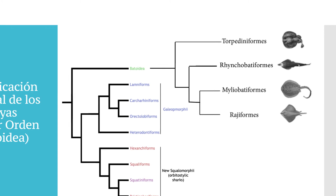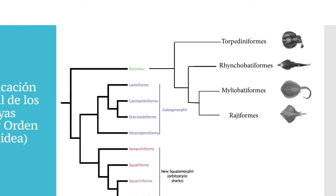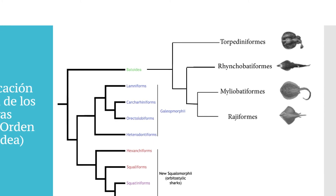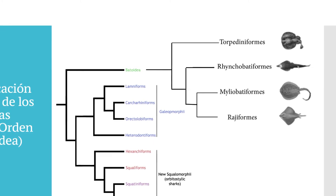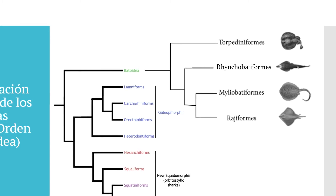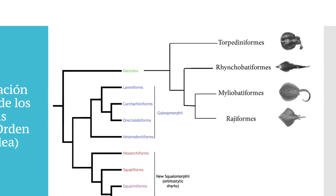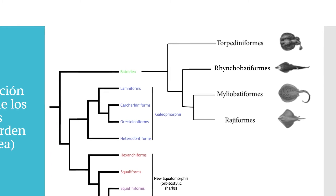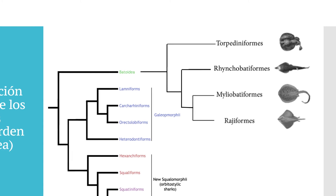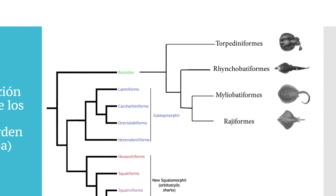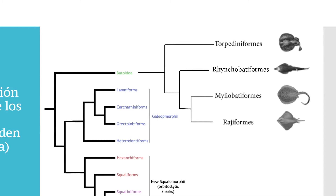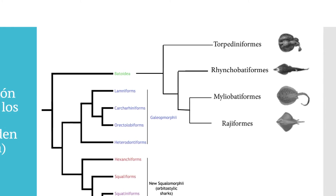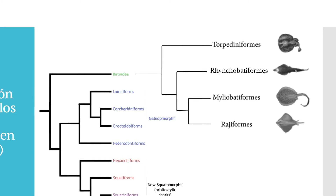Then we have the Rhinobatiformes, known as guitarfish or guitar rays. In many places you'll see them called guitarras — fishermen know them as guitar rays or simply guitarras. This is because they have a shape similar to a guitar. They have a fairly pronounced triangular snout and the tail is considerably longer in proportion compared to the Torpediniformes group.